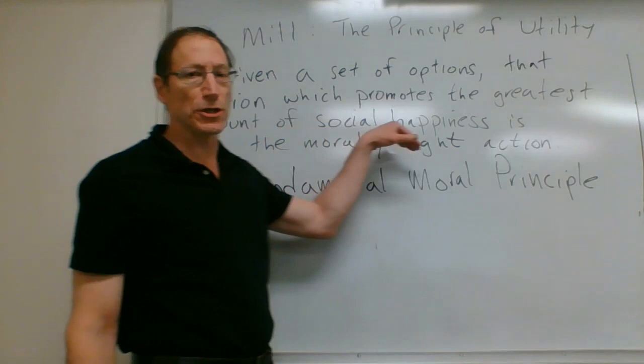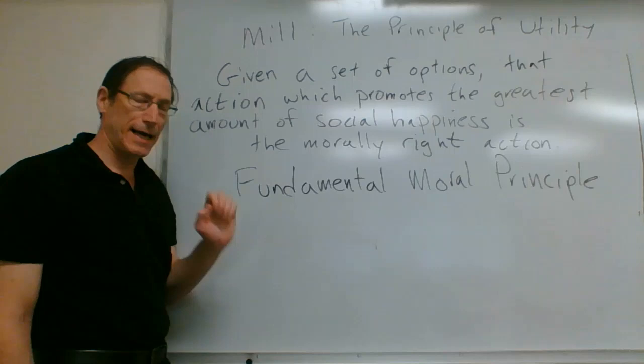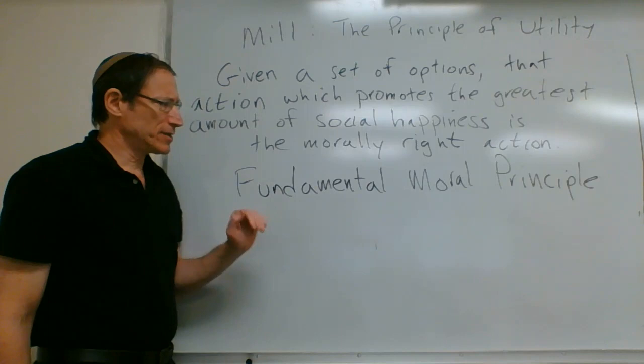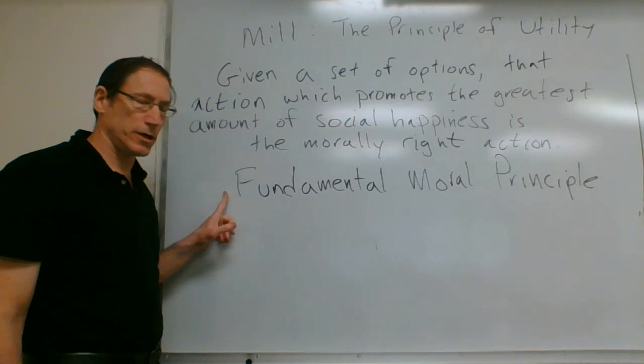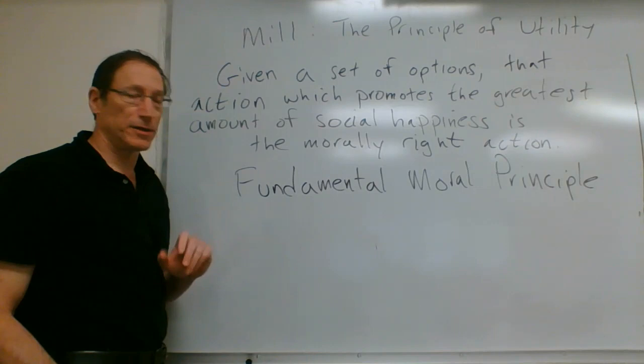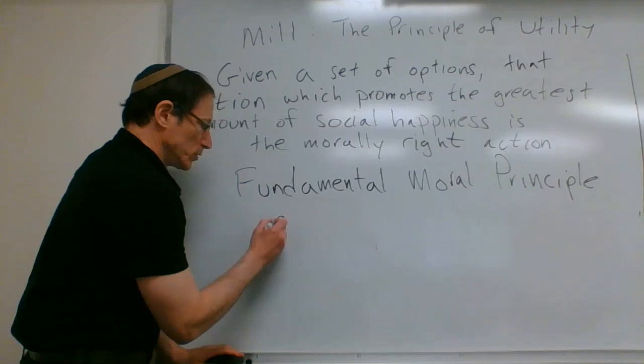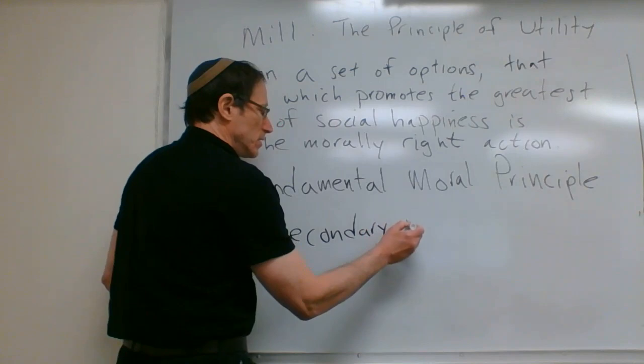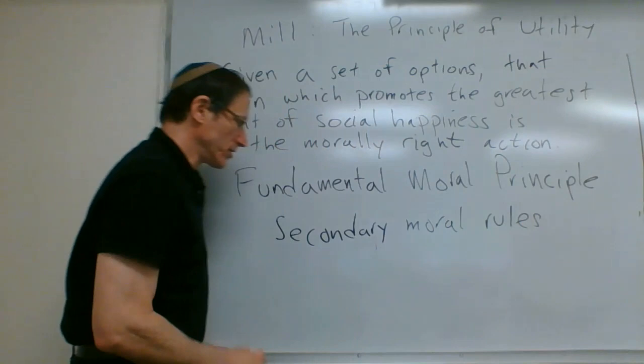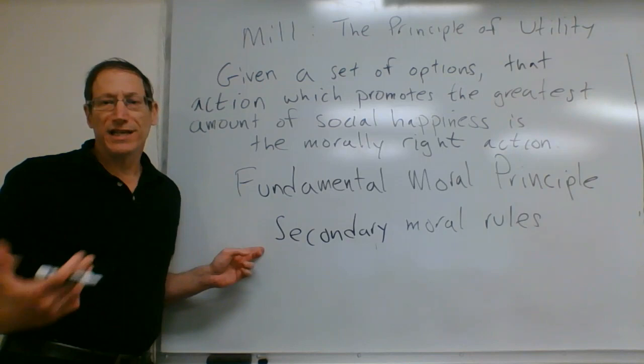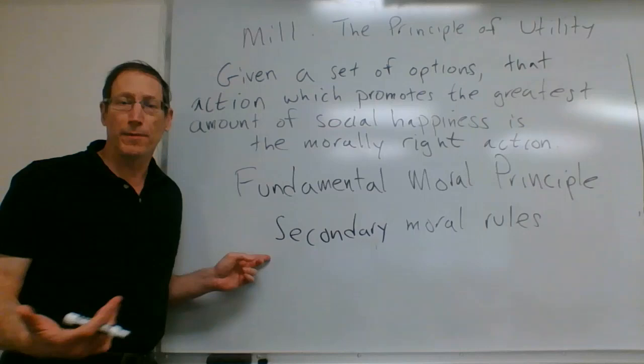We're going to have to talk more about what this phrase 'social happiness' means, and Mill has a specific theory about what happiness is. For now, let's go back to the idea of a fundamental moral principle. Mill believes that there are a number of secondary moral rules — the list of do's and don'ts that we ordinarily would rely upon to guide our actions.